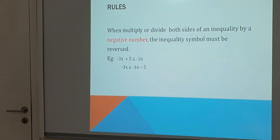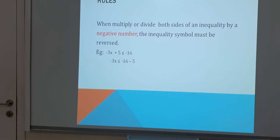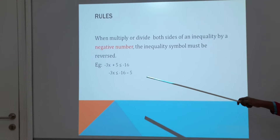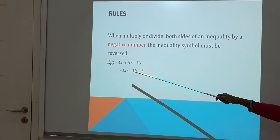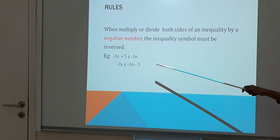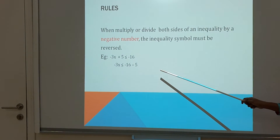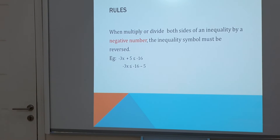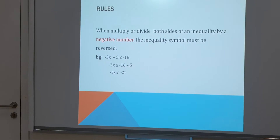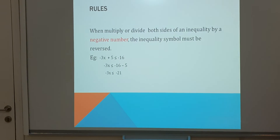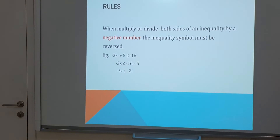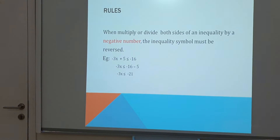Negative 3x plus 5 is less than or equal to negative 16. Keep the variable on the left-hand side and bring the numbers to the other side. We have positive 5, so bring it to the right-hand side. Negative 16 minus 5 gives negative 21. So negative 3x is less than or equal to negative 21.